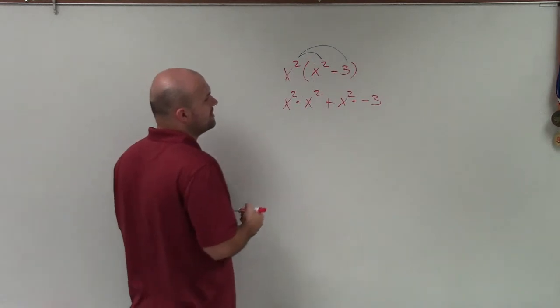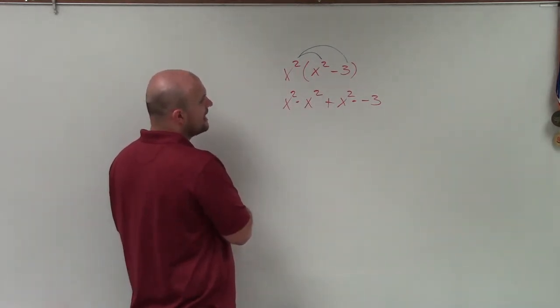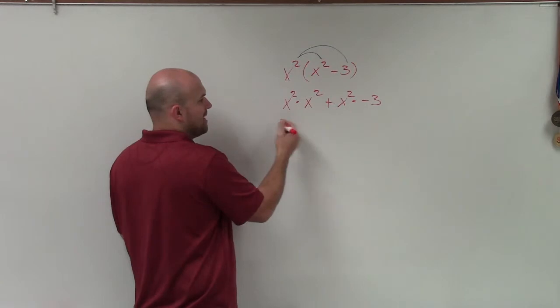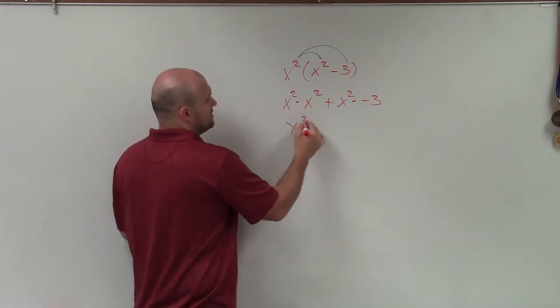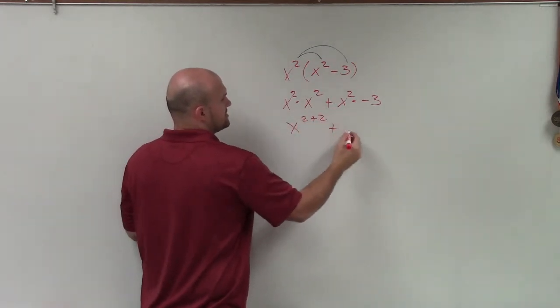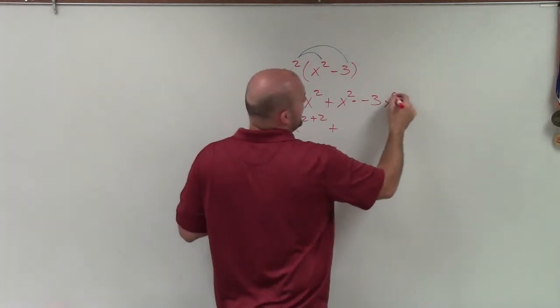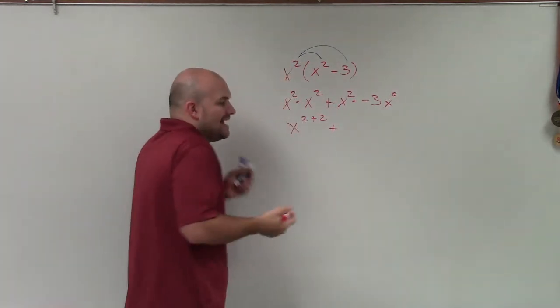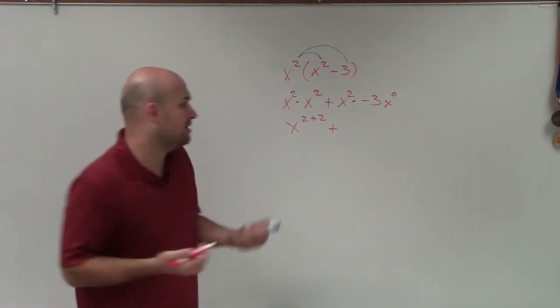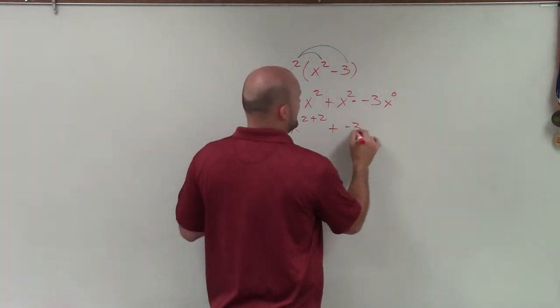When multiplying exponents, what we do is we just add the powers. So this becomes x to 2 plus 2. You could say, well, there's no x over here. We can write an x. We can say x to the 0. Any number raised to the 0 power is 1. So therefore, this would basically look like negative 3.